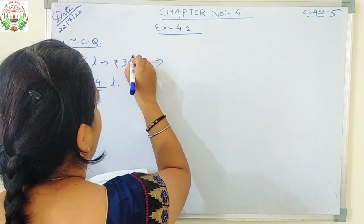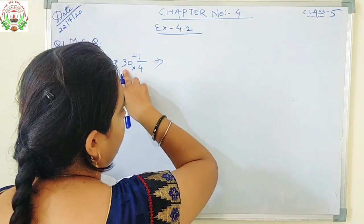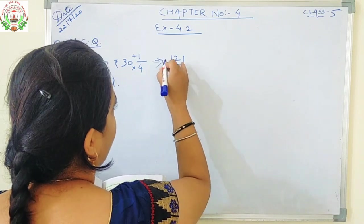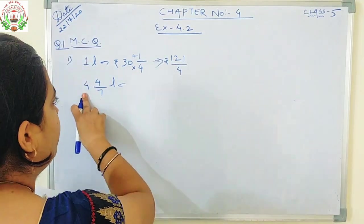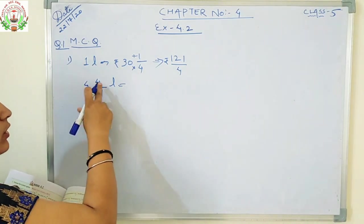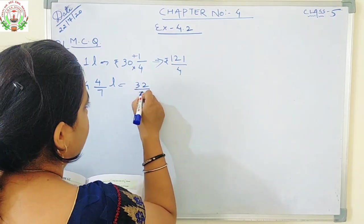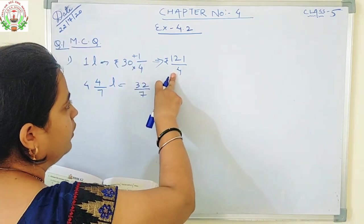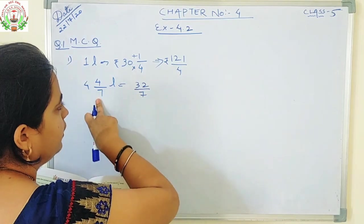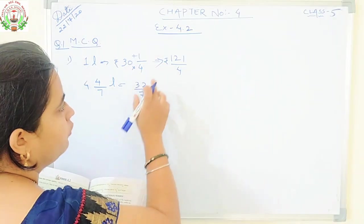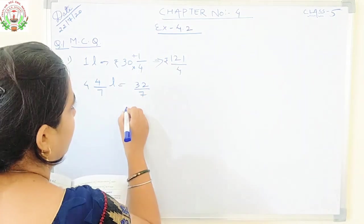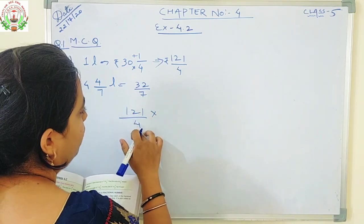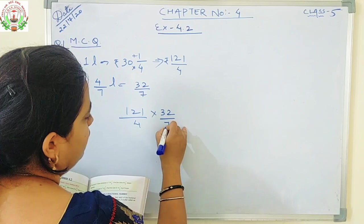30 into 4 plus 1: 30 into 4 will be 120, 120 plus 1 will be 121 by 4. And here, 7 fours are 28, 28 plus 4 is 32, so 32 by 7. So if 1 litre cost equals 121/4, then the cost of 32/7 litres will be found by multiplying both: 121 upon 4 into 32 by 7.